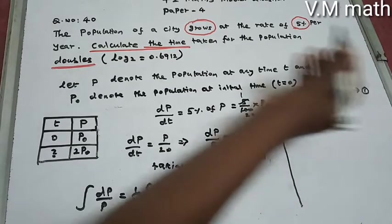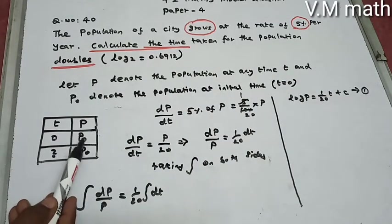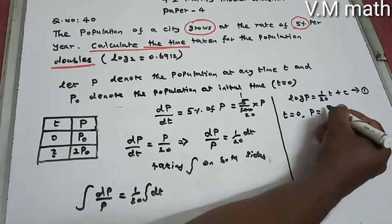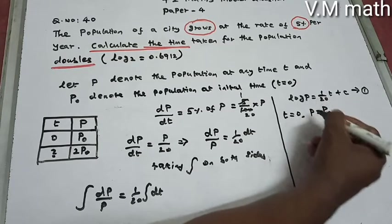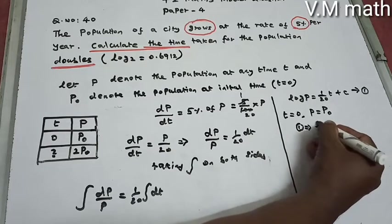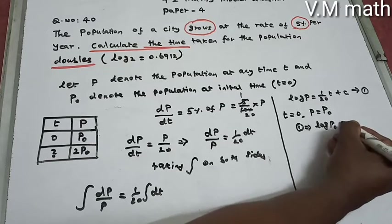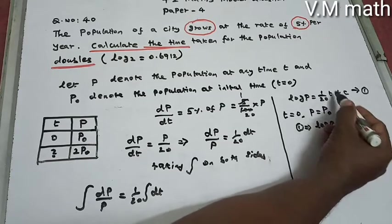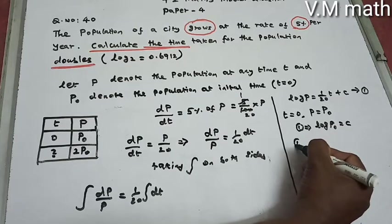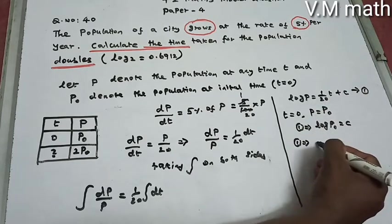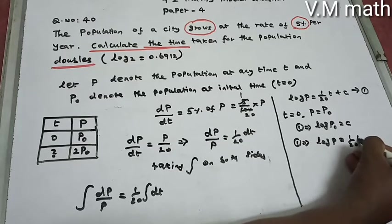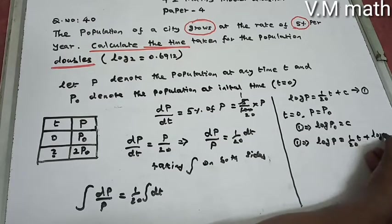Applying the initial condition: at T equals 0, P equals P0. Substituting into the equation gives log P0 equals C. So the constant C equals log P0.